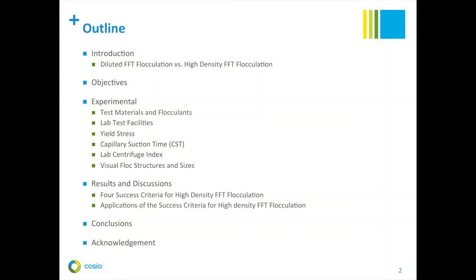This is the outline of my presentation. I will briefly talk about the difference between the diluted FFT flocculation and the high-density FFT flocculation, and the objectives of this project. Then I will discuss the experimental materials, flocculant, lab test facilities, and the measurement of yield stress, capillary suction time (CST), lab centrifuge index, and visual floc structures and size. I will focus on the results and discussions on the development of four success criteria for high-density FFT flocculation and their applications, and conclude with conclusions and acknowledgements.